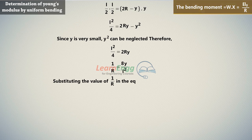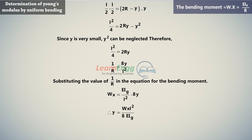Substituting the value of 1 by R in the equation for the bending moment, simplifying the above equation and get the value of Young's modulus, i.e., E.